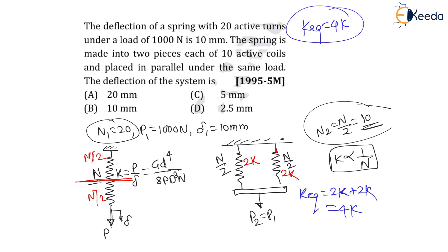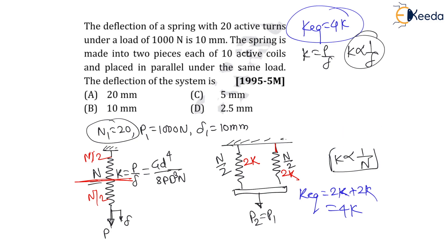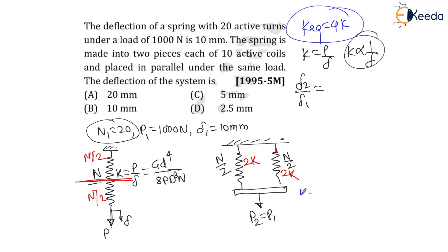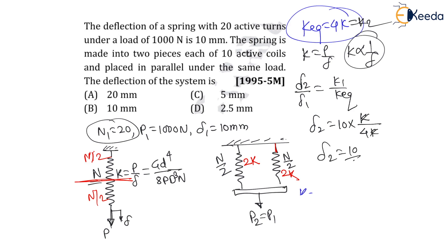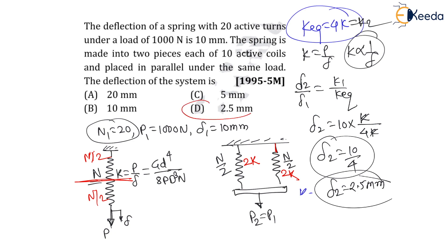Now let us find the deflection of this system. Since k is inversely proportional to deflection, we can write δ₂/δ₁ = k₁/k₂. Here k₁ = k and k₂ = k_eq = 4k. Therefore δ₂ = δ₁ × (k/4k) = 10 × (1/4) = 2.5 mm. The deflection reduces by 4 times, from 10 mm to 2.5 mm. Therefore for this question, option D is the correct choice.